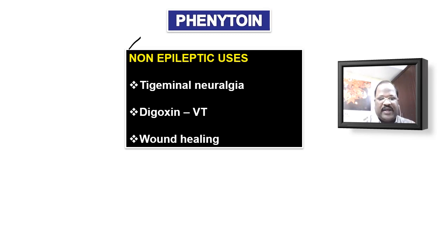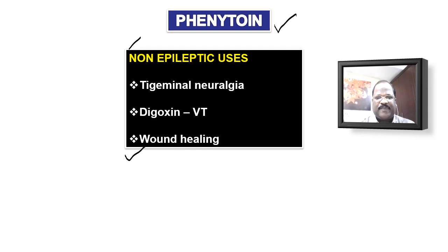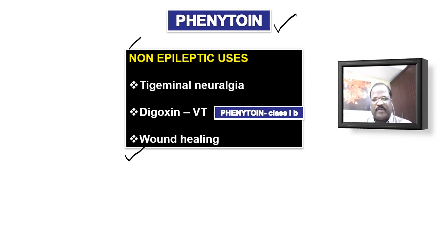For wound healing: phenytoin has a side effect of causing gum hypertrophy due to collagen accumulation. Based on that property, if you crush the phenytoin tablet and put the phenytoin powder in a wound, the wound will close because of collagen accumulation. Regarding anti-arrhythmic property: phenytoin is useful for treatment of digoxin-induced ventricular tachycardia. You should know that phenytoin falls under class 1B anti-arrhythmic agents. For trigeminal neuralgia, the drug of choice is carbamazepine, but phenytoin is also useful.